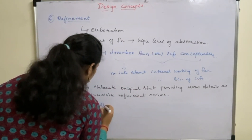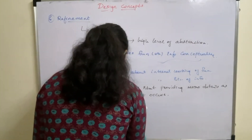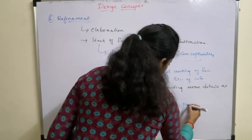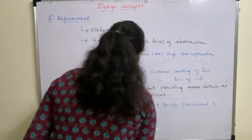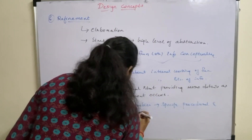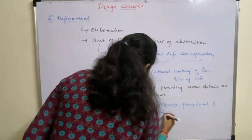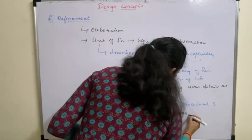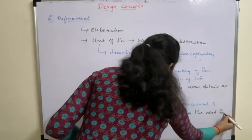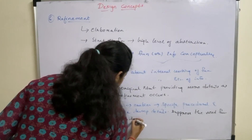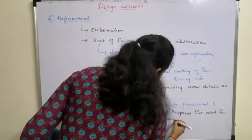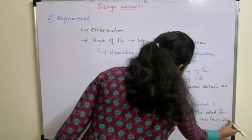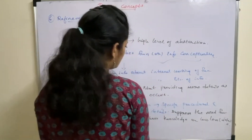Coming to the difference between refinement and abstraction. As we discussed abstraction before, abstraction enables you to specify procedure and data description details, but suppresses the need for outsiders to have knowledge on low level details.